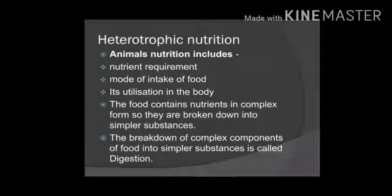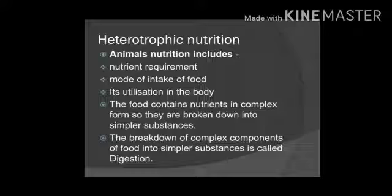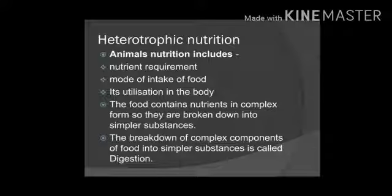Animal nutrition includes nutrient requirement, mode of intake of food, and its utilization in the body — that is, how animals consume food and how the nutrients present inside the food are utilized by the body. Food has nutrients present in it in a complex form.